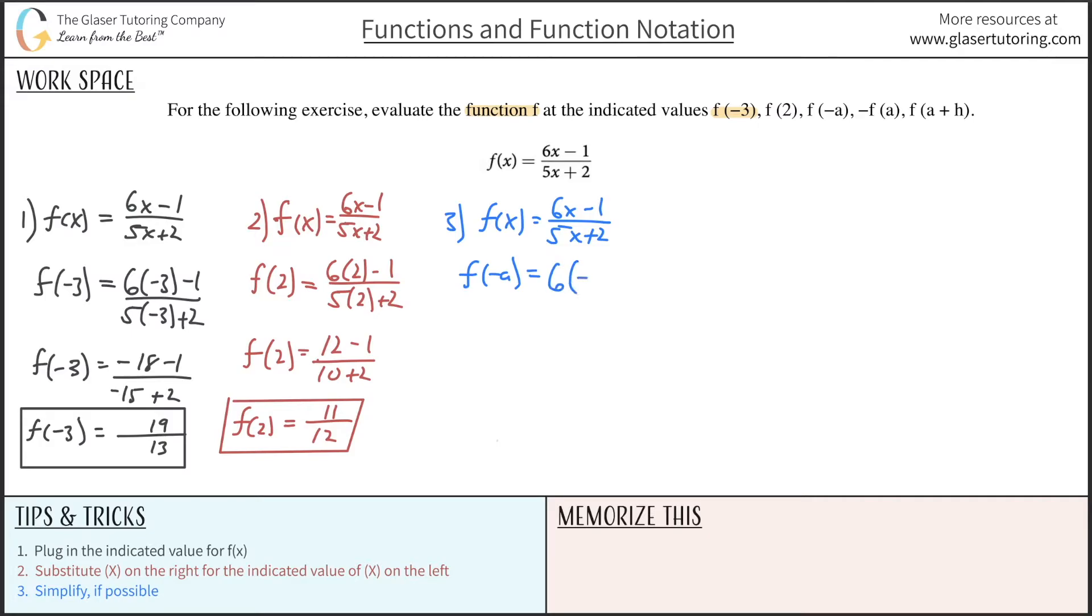So this is 6 multiplied by negative a minus 1 all over 5 times negative a plus 2. And you're going to simplify if you can. All right, so this is going to be negative 6a minus 1 all over then. This is negative 5a plus 2. And that's it. Okay, that's all I can really simplify. So that takes care of number 3.